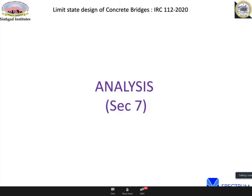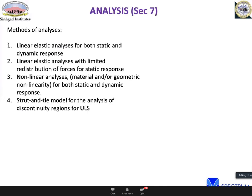Section 7 covers methods of analysis: linear elastic (static and dynamic), linear elastic with limited redistribution, non-linear analysis for both material and geometric non-linearity, and the strut-and-tie method. The code permits the strut-and-tie method and directs users to specialized literature such as the Eurocode, CEB-FIB Model Code 2010, or FIB Bulletin 40/42. This method is particularly important for structures with discontinuities.